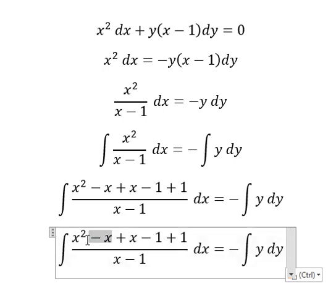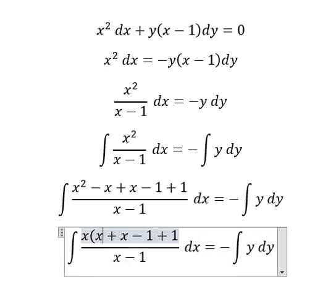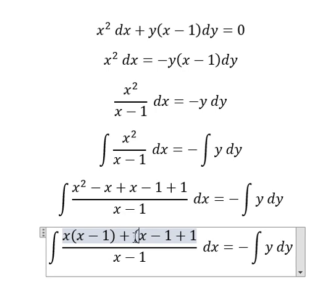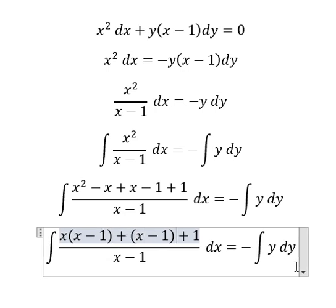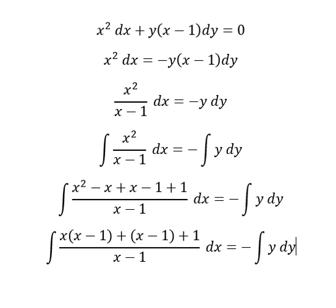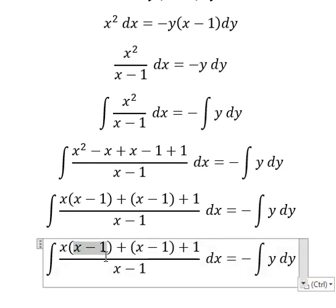This one we can do factorization by x, this one by one. So x minus one times x minus one divided by x minus one, so we have one.